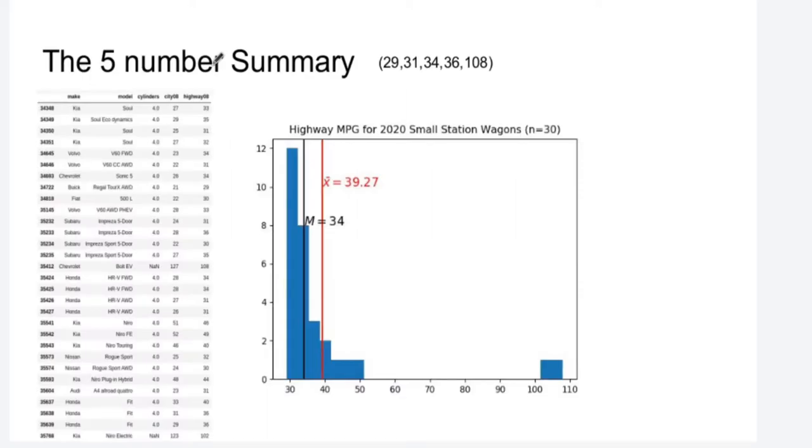Taking a look again at our miles per gallon, the five-number summary is 29, 31, 34, 36, 108.